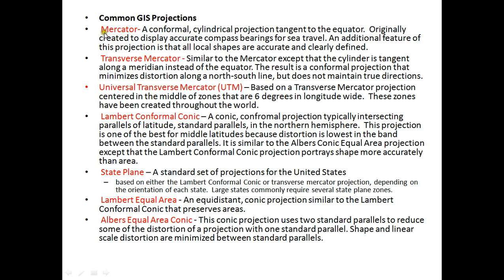Common GIS projections include Mercator, Transverse Mercator, Universal Transverse Mercator (UTM), Lambert Conformal Conic, State Plane, Lambert Equal Area, and Albers Equal Area Conic. We generally use these four projection systems in GIS or map preparation. The Mercator is a conformal cylindrical projection tangent to the equator, originally created to display accurate compass bearings for sea navigation. An additional feature is that all local shapes are accurately defined.